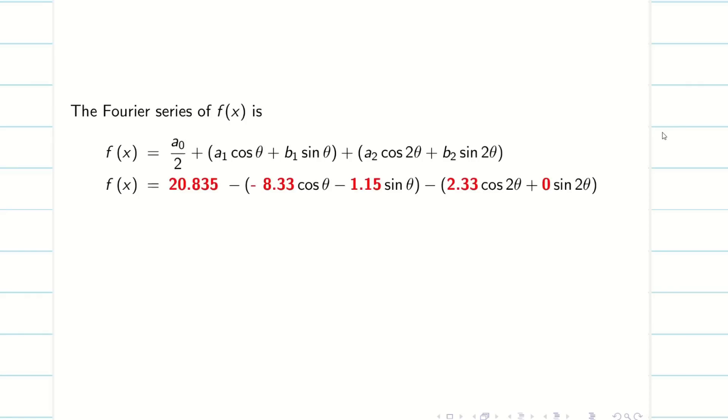Write the Fourier series formula. Since it's up to second harmonic, just write a1, a2, b1, b2 terms. Substitute here. And very important thing as I said, you have to mention where theta equal to pi x divided by 3. That's it, students. Problem gets over.